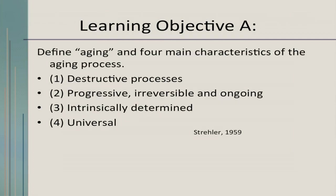Under learning objective A, I'm going to define aging and the four main characteristics of the aging process. These are: destructive processes; progressive, irreversible, and ongoing processes; intrinsically determined processes; and universal ones.